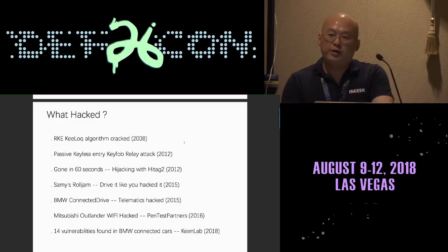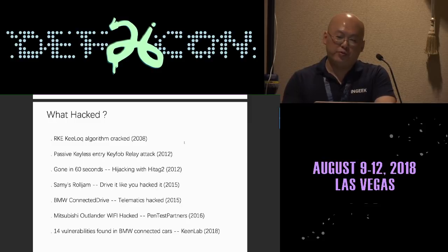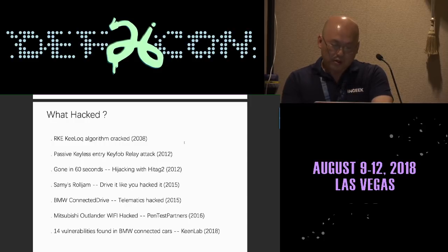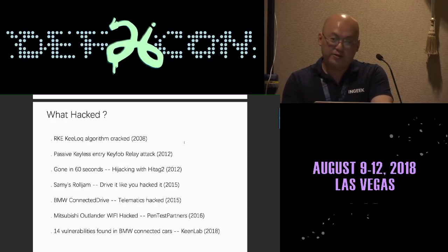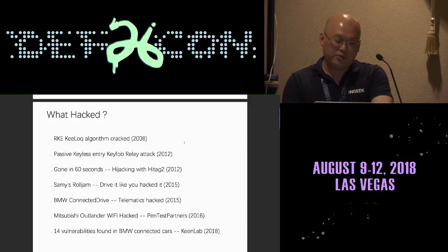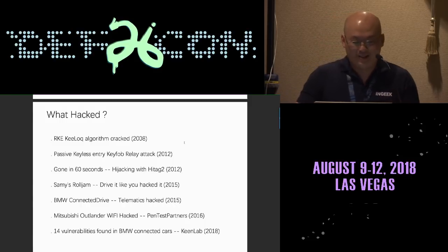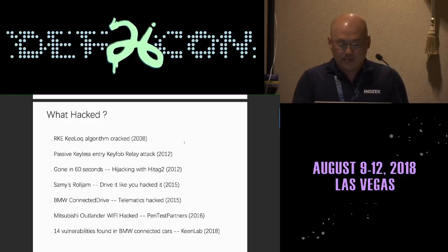In 2015 some new attack vectors emerged. A German researcher found a way to hack your BMW through the cellular network. And researchers from the company Pentest Partners in England found out how to hack the Wi-Fi access point on the Mitsubishi Outlander.